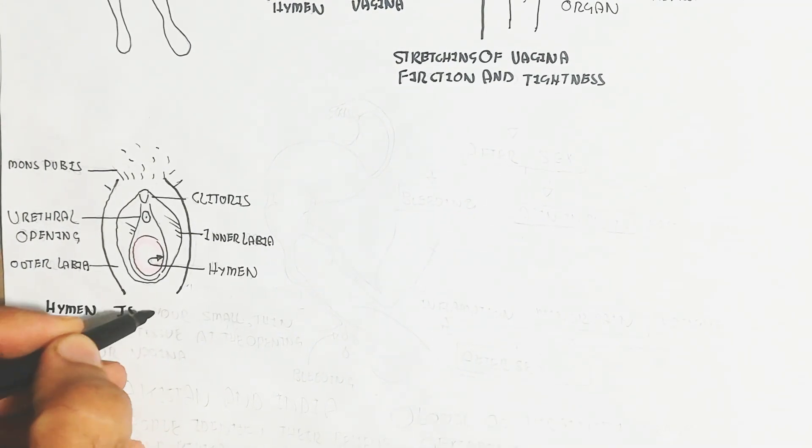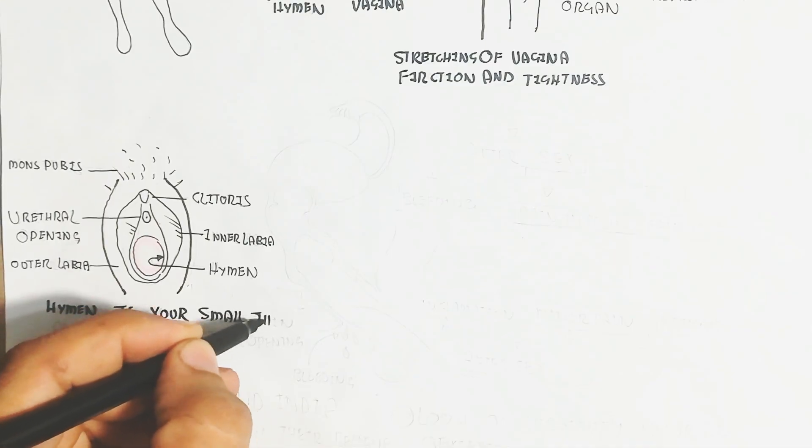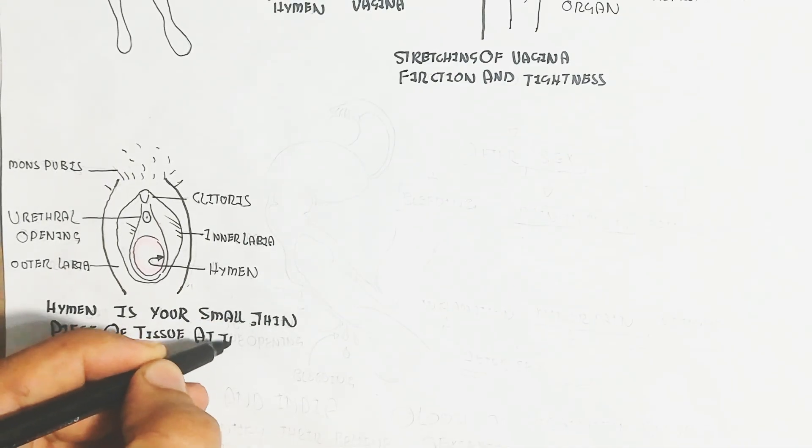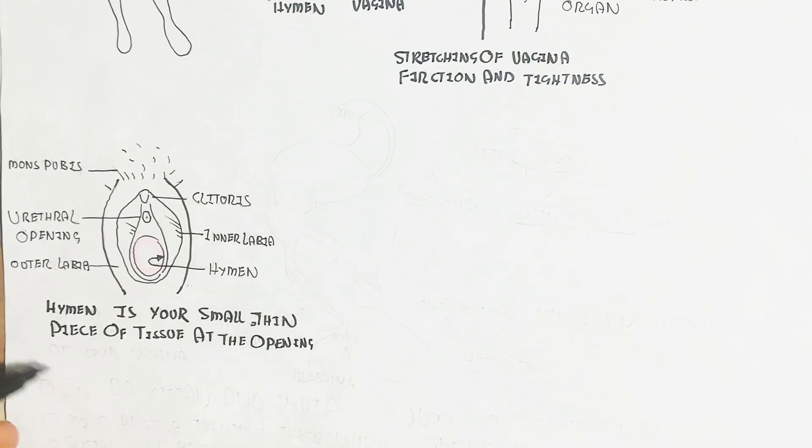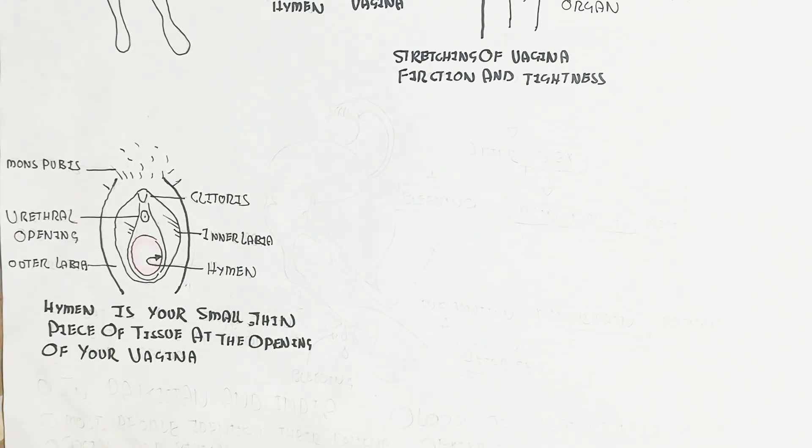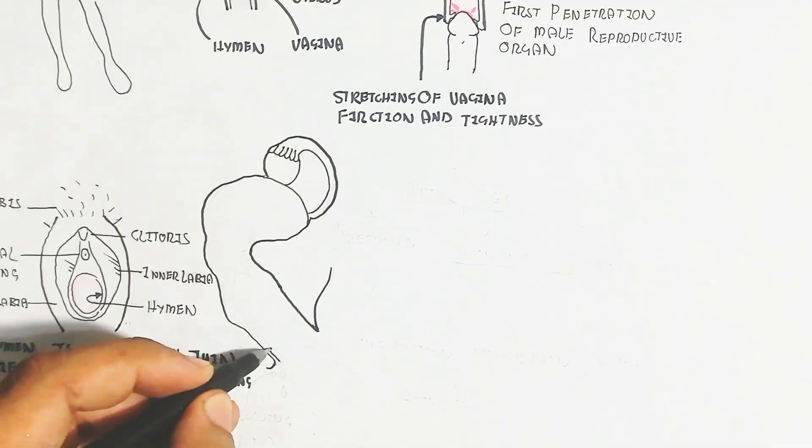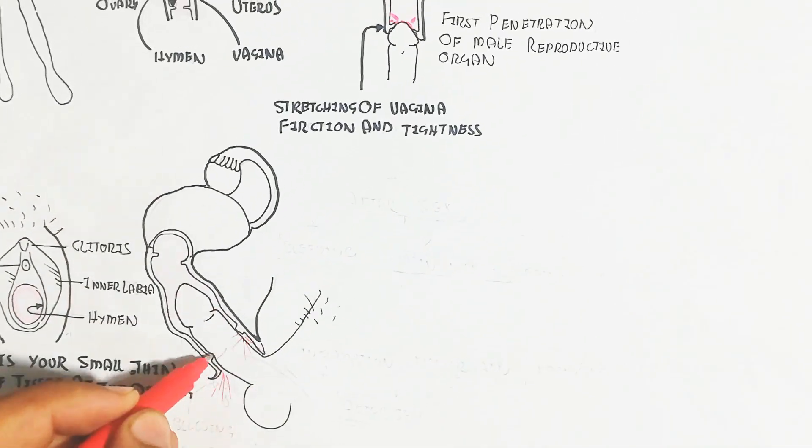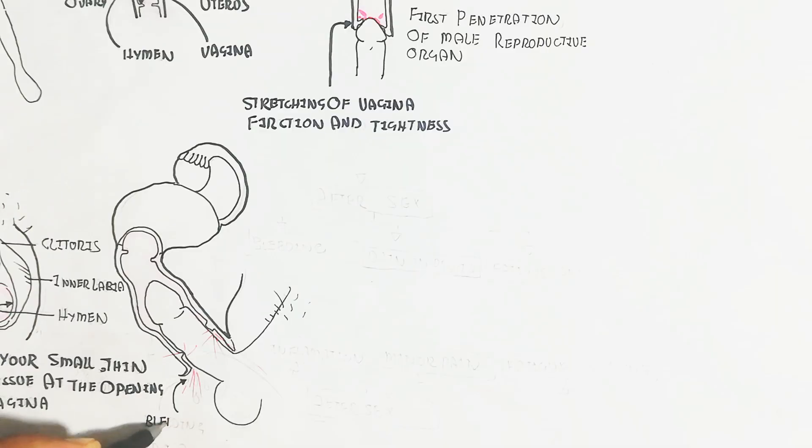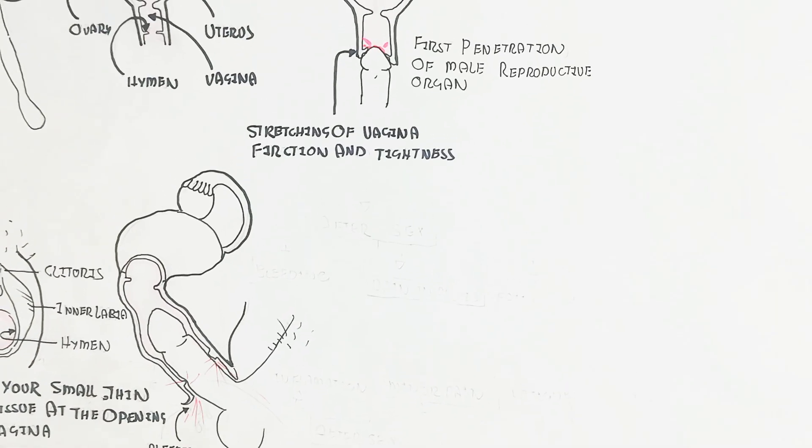Hymen is a small thin piece of tissue at the opening of your vagina. This is the front diagram which shows the hymen, and this hymen has different types we will discuss. This is the penetration.